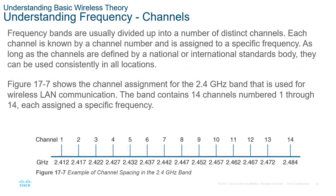Within the 2.4 GHz band, channels are organized in roughly 20 MHz groups, and in the U.S. we can use channels 1 through 11. However, channel 1 overlaps with channels 2 through 5, channel 6 overlaps with channels 2–5 and 7–10, and channel 11 overlaps with channels 7–14. Therefore, the three non-overlapping channels we normally use are channels 1, 6, and 11 — corresponding to center frequencies 2.412, 2.437, and 2.462 GHz. These are the main three bands available.